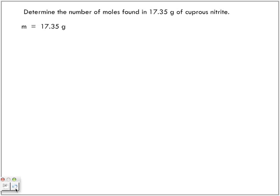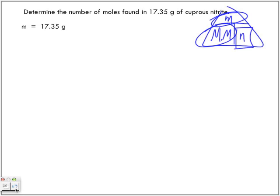We said that in the formula that we needed to find, we had molar mass, we had mass, and we had number of moles. So we know we have this one, we can calculate this one, which means this is what we're trying to find.